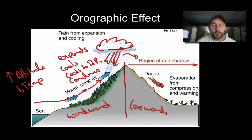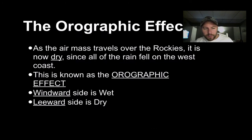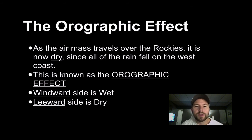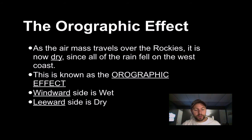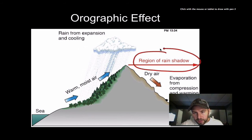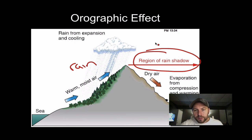This diagram is really important — definitely copy it down. As an air mass travels over the Rockies, it is now dry since all the rain fell on the west coast, on that windward side of the mountain. This is known as the orographic effect. Going back for a second, you can also see here where the term 'rain shadow' came from: since the rain is over on the windward side, there's no rain on the leeward side — it's called the rain shadow.